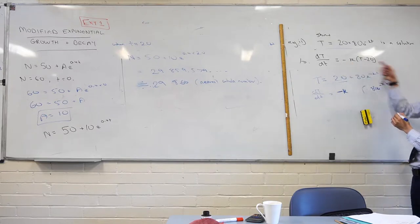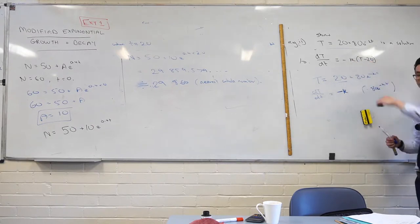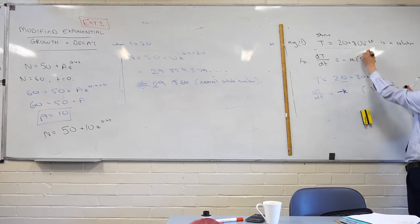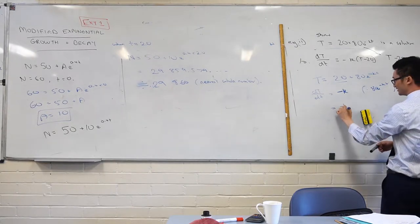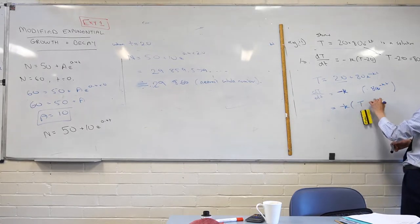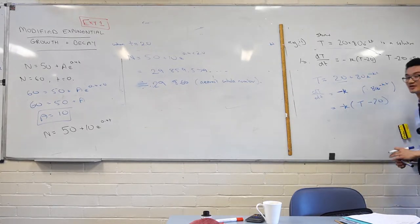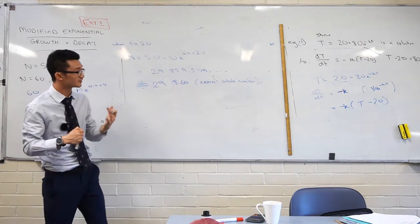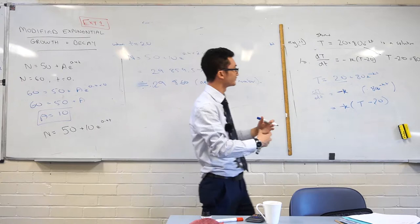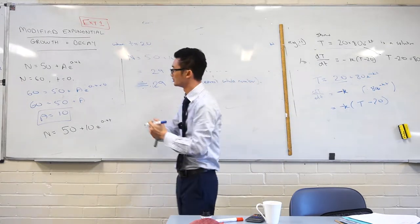But then showing that this satisfies this, you have to do a bit more work, right? We have to show that, how do I incorporate t minus 20? Hopefully you can recognize that now from this section. All we're doing is we're just saying, well, we just put 20 to the other side, 80e to the negative kt, right? So I can say that's equal to negative k outside of t minus 20. Very common question.